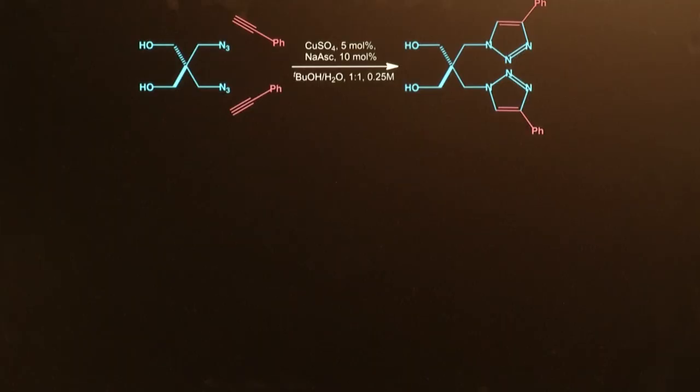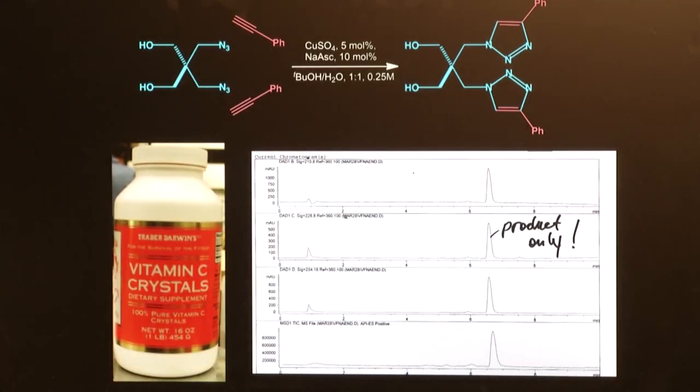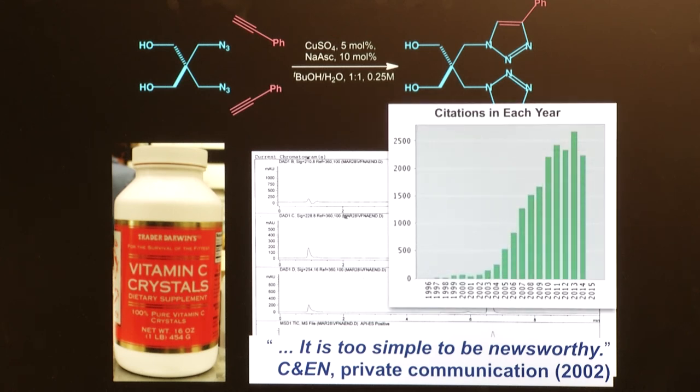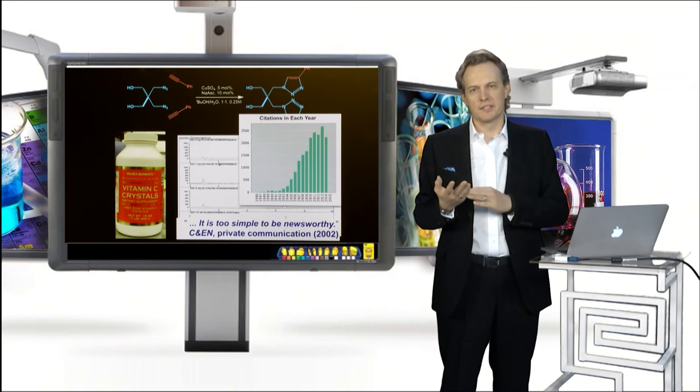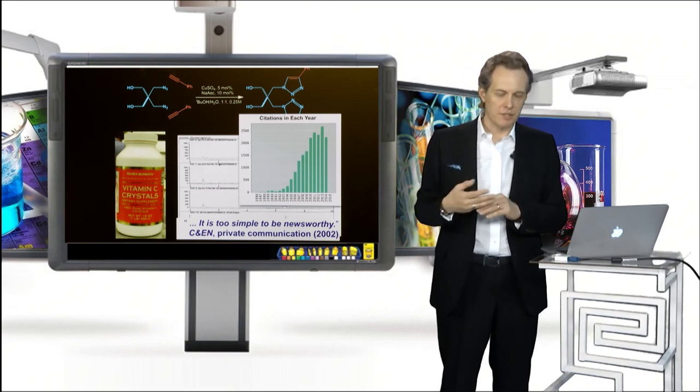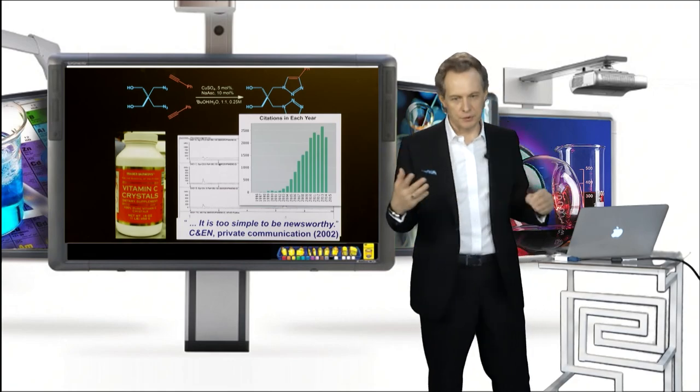Those examples are very rare, but they do happen. And the copper catalyzed cycloaddition was one of those such examples. It works very well in aqueous systems. All it takes is a little bit of ascorbic acid, and it actually has been used in the last 12 years very widely by chemists, biologists, polymer chemists, material scientists, and so forth.